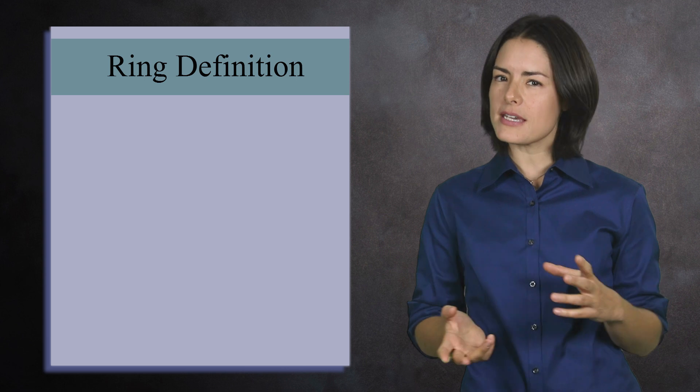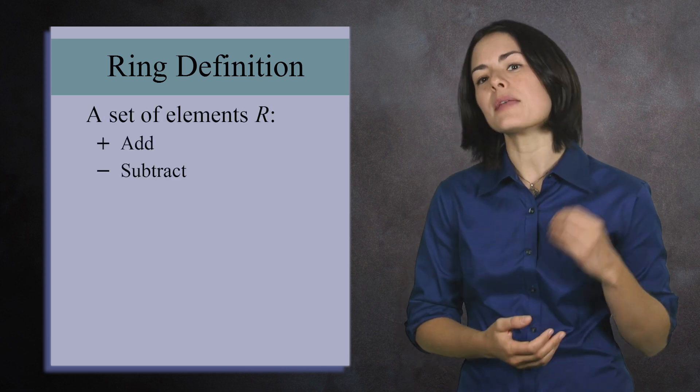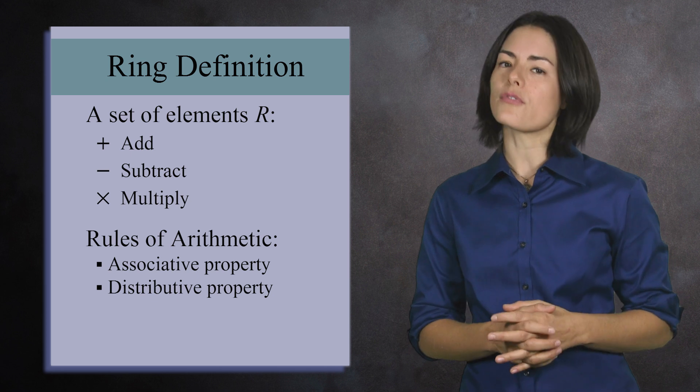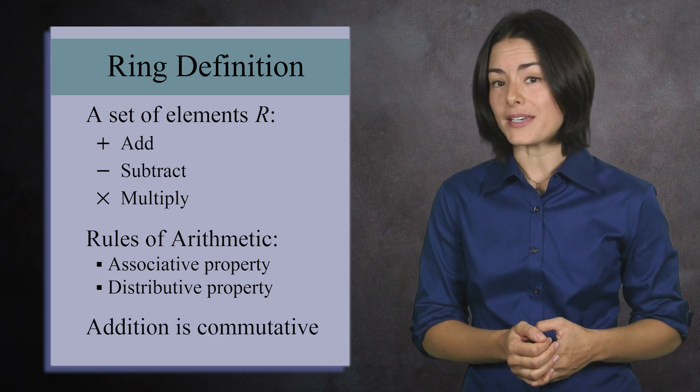Before we dive into the examples, let's remind ourselves of the definition of a ring. Loosely speaking, a ring is a set of elements where you can freely add, subtract, and multiply with the usual rules of arithmetic. And while addition is commutative, multiplication may not be.